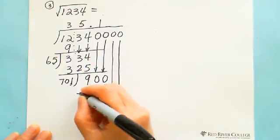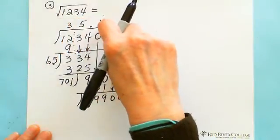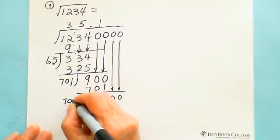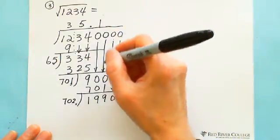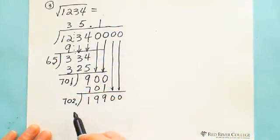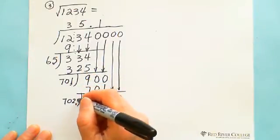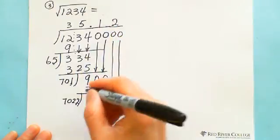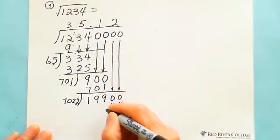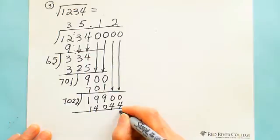This digit is 1 and the trial digit is also 1. So 1 times 701 equals 701. Subtract — you get 199. If you want to keep going, add another two zeros: 19900. The divider is double these three digits: 702. Estimate the next digit. If you try 3, 3 times 7 is 21 — too big when extended. So only 2: put 2 here and 2 here. So 2 times 2 is 4; working through the multiplication gives a result around 1404, leaving a remainder.